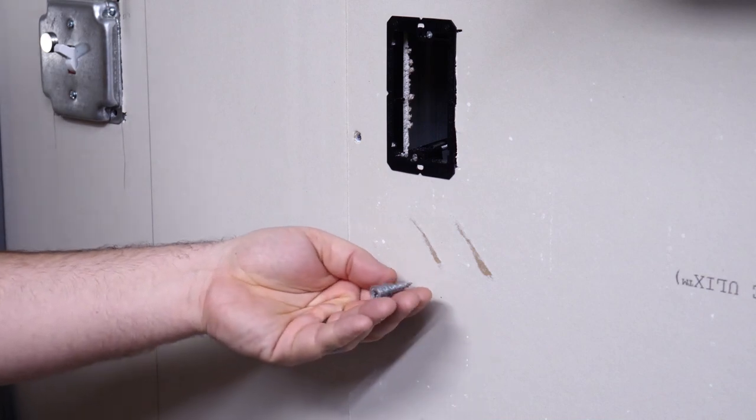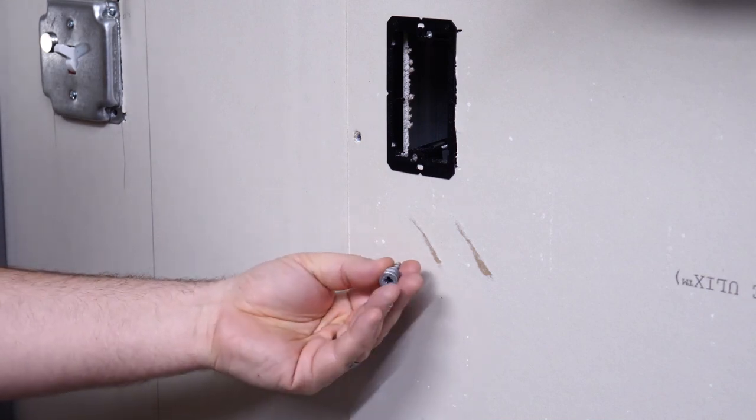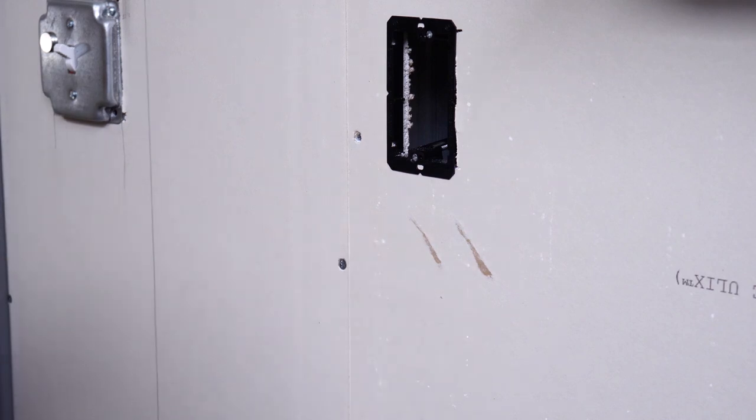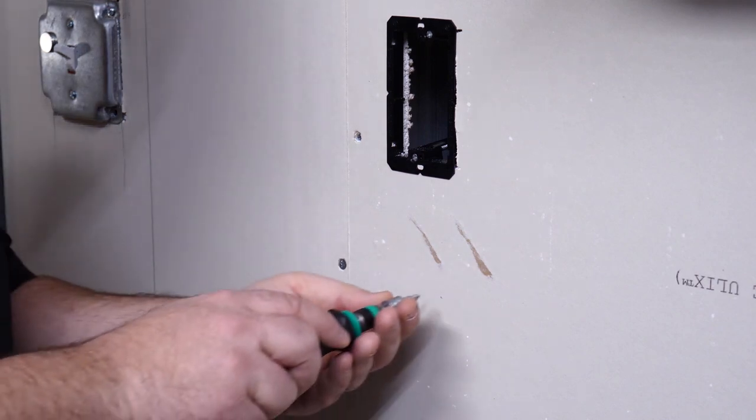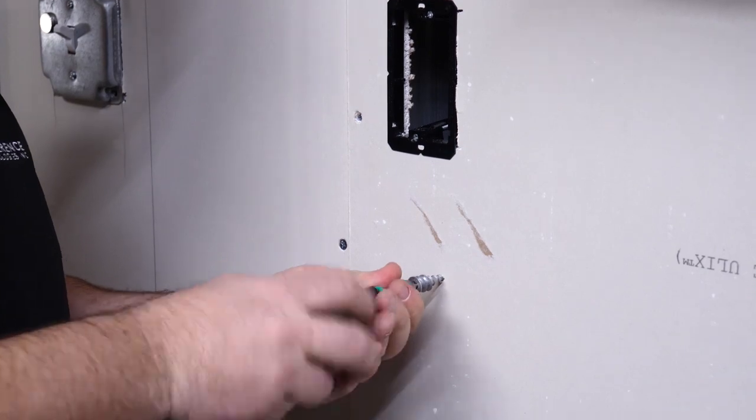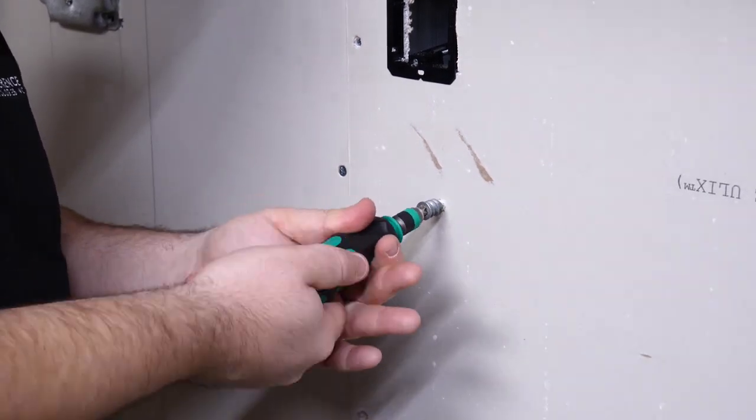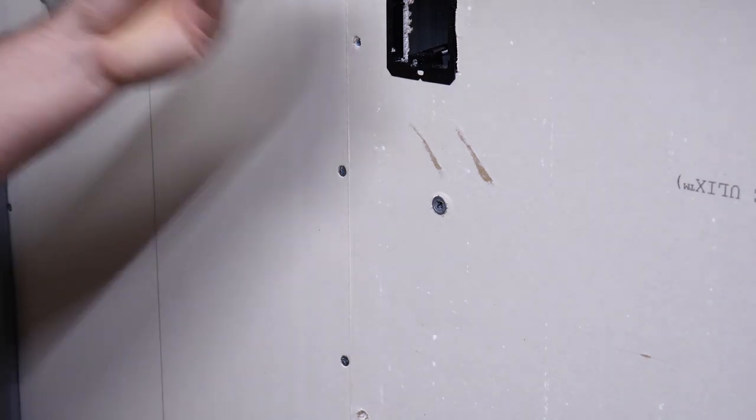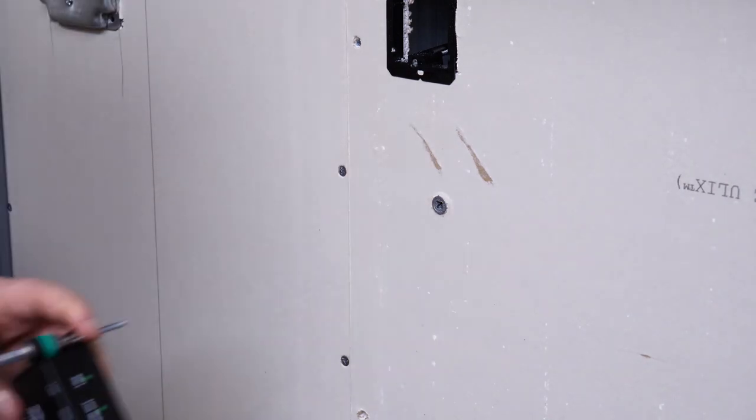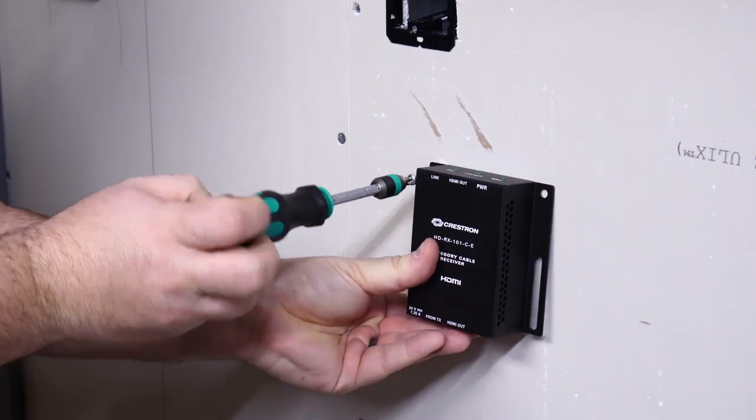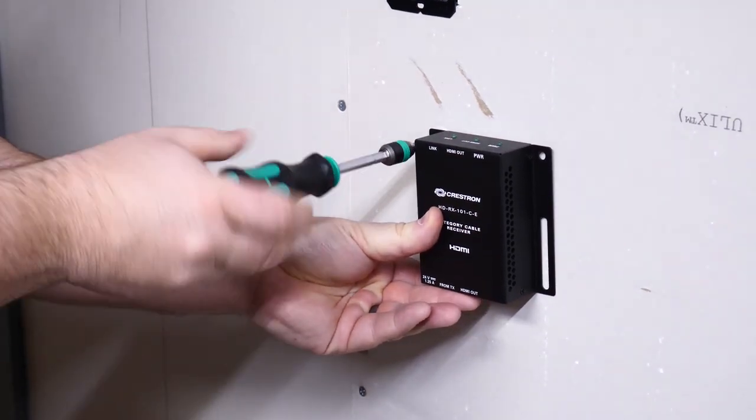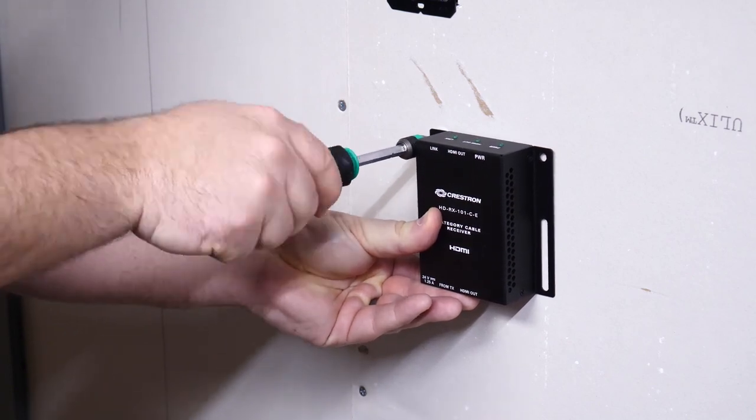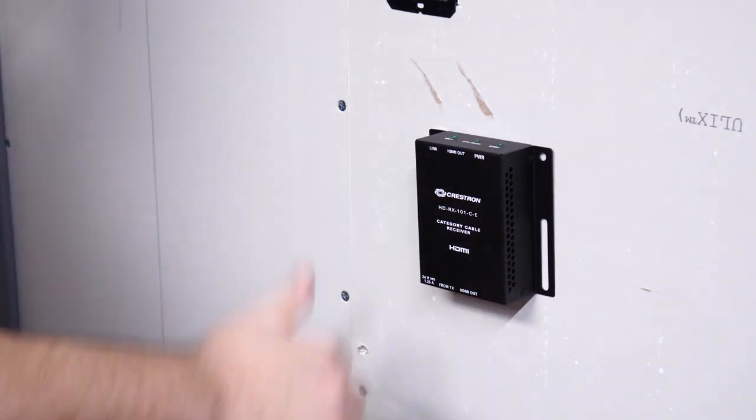The process to install one of these is super quick. Since it is self-drilling, it doesn't require any pre-drill. Just mark out your hole and screw the anchor part into the wall with either a screwdriver or a screw gun. Then you just need to use the provided screw to attach your device to the wall. Boom! That was easy.